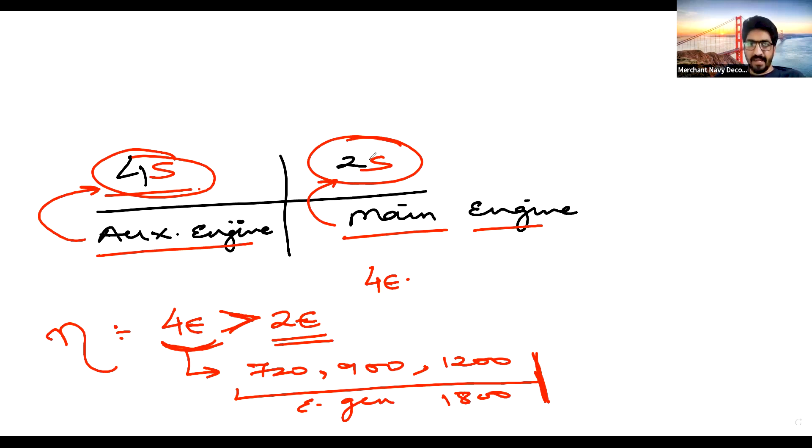But again there are other problems with four stroke engine while we do not choose four stroke engines to be our main engine. And power to weight ratio is one advantage of two stroke engine. Second advantage is reliability. Two stroke engine is much more reliable engine than four stroke.